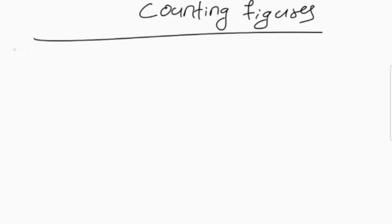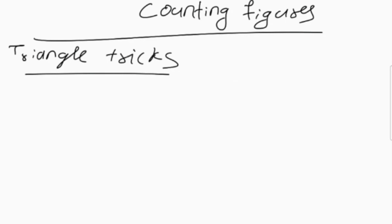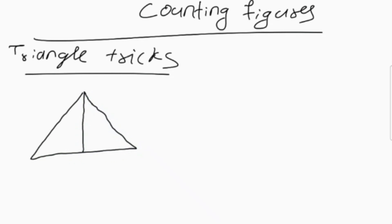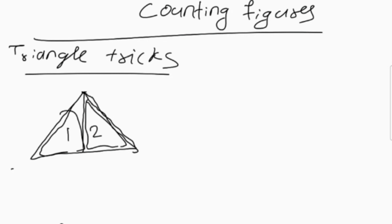Let's start with triangle tricks. Starting from the simple one — this is a triangle, and the triangle has a line inside it. So how do we count the number of triangles? Let's number them: 1, 2. The triangle values are counted individually, and then combined for the total triangle count. The formula is 1 plus 2 equals 3.